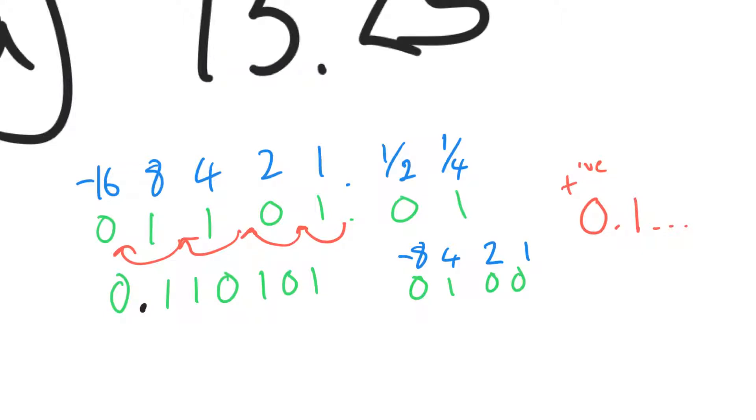If we're looking at the mantissa, how many bits for the mantissa? 8 bits. 1, 2, 3, 4, 5, 6, 7. So what do I need to do? This thing here, I need to pad with a 0. Beautiful. That is how we solve positive 13.25.